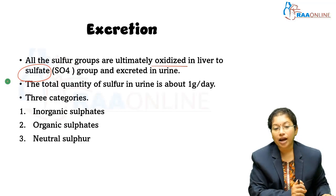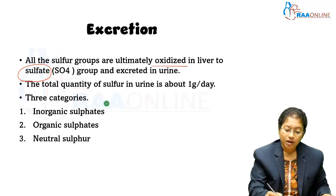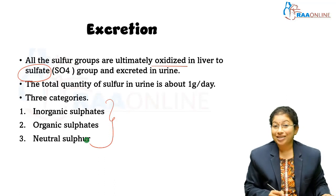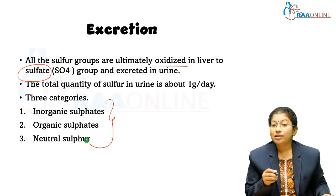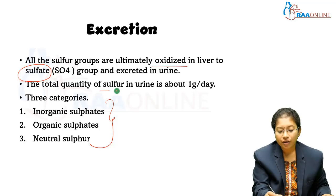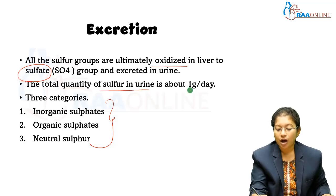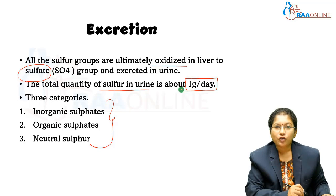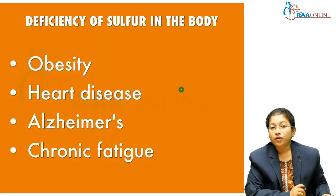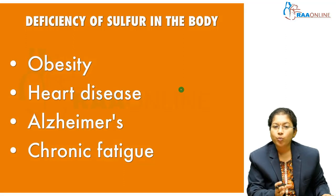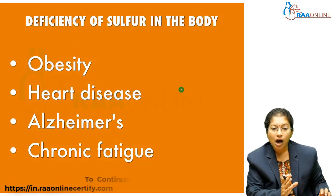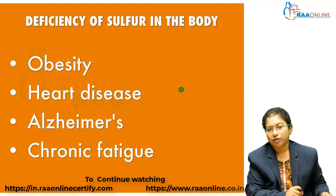Sulphur is excreted in these three forms, and the total quantity of sulphur present in urine is about 1 gram per day. Deficiency of sulphur in the body causes obesity, heart diseases, Alzheimer's, and chronic fatigue.